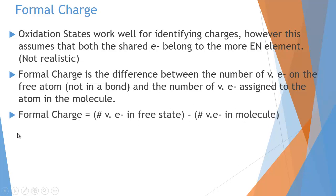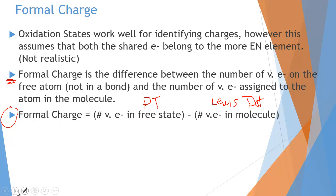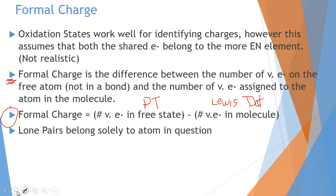Here's the overall formula for formal charges. This is pretty important and you're definitely going to want to write this down. What we're going to do is build these molecules and analyze these covalently bonded compounds in terms of looking at Lewis dot structures, whether they're resonating or not. To analyze formal charge, we're going to take the number of valence electrons in the free state — right off the periodic table — and then compare that to what we get from the Lewis dot once it's actually bonded.